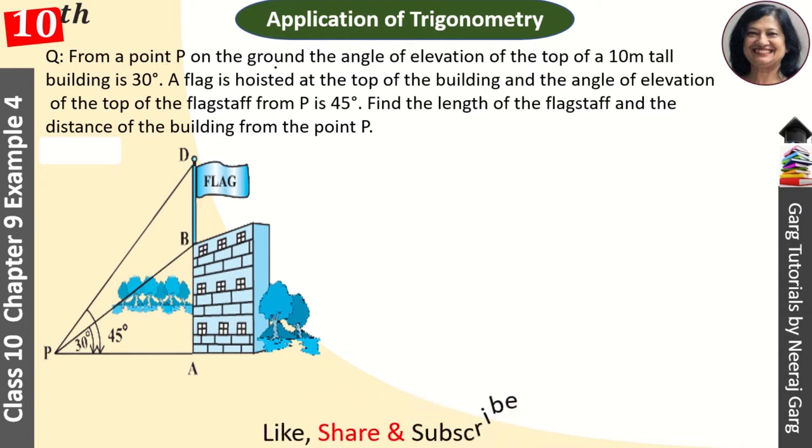From a point P on the ground, the angle of elevation of the top of a 10 meter tall building is 30 degrees. A flag is hoisted at the top of the building and the angle of elevation of the top of flagstaff from P is 45 degrees. Find the length of flagstaff and the distance of the building from the point P.